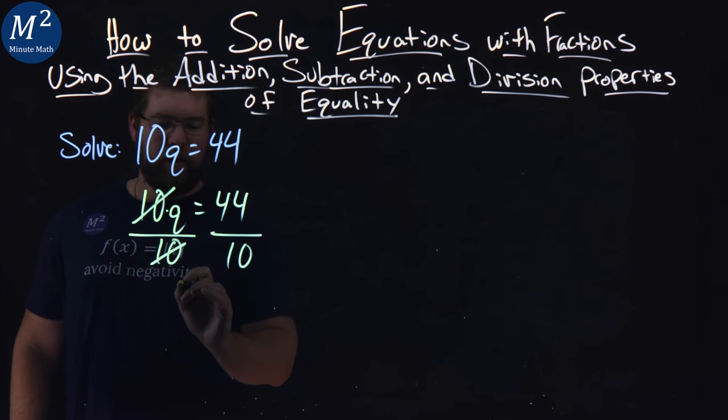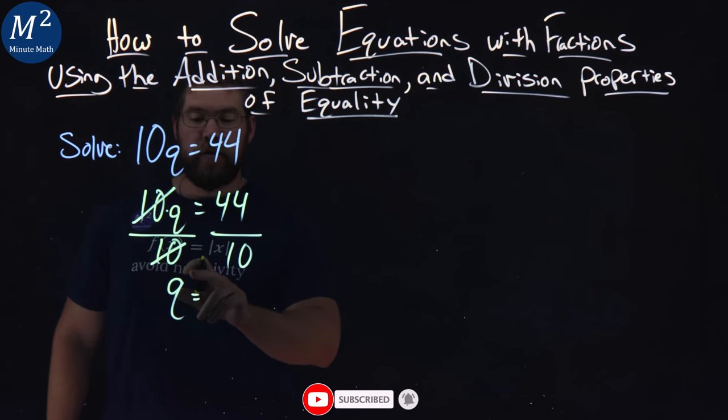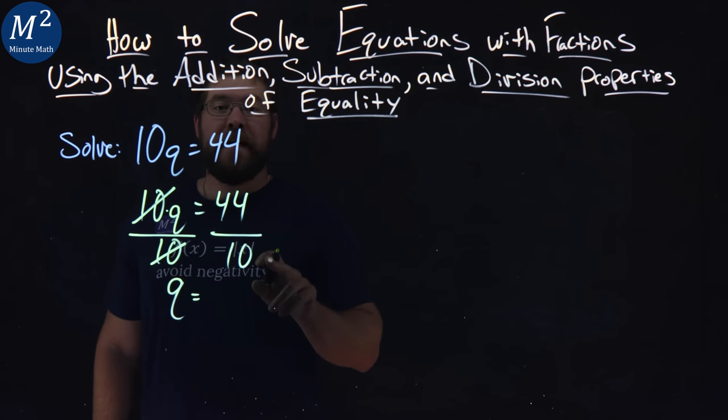10s cancel, and we're left with q by itself here. From there, q now by itself, we have 44 over 10.